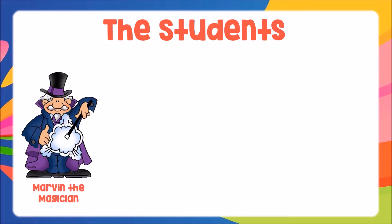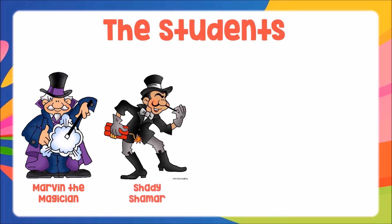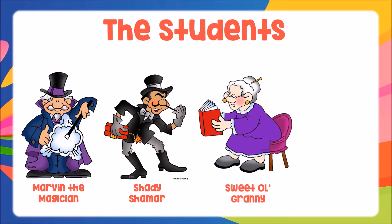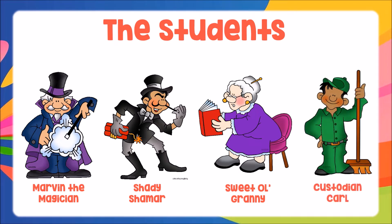Marvin the Magician — he's very mysterious, always appearing and disappearing. Then there's Shady Shamar — he's super sly, sneaky, and seems to snoop. Next, there's sweet old Granny, whose grandkids wanted her to have a fun night out of the house, so they gave her this art lesson. Last is Custodian Carl. He works at the museum but decided to take the night off for an art class. He knows the floor plan of the museum well.